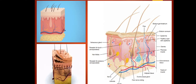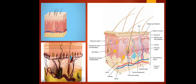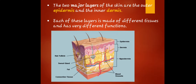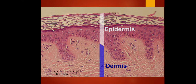The two major layers of the skin are the outer layer called the epidermis and the inner layer called the dermis. Each of these layers is made of different tissues and has very different functions. This illustration shows the epidermis and dermis.